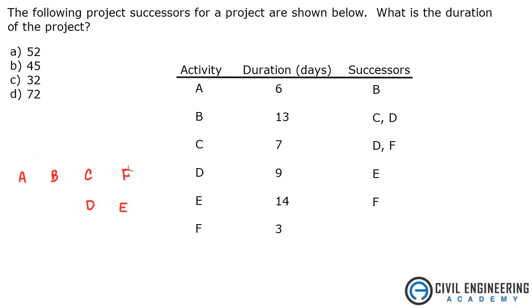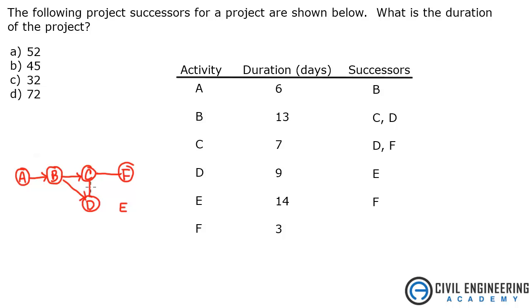For E, we've got F. Let's draw this in. A goes to B. B has C and D. C goes to D and F. D goes to E. And E ends up going to F.